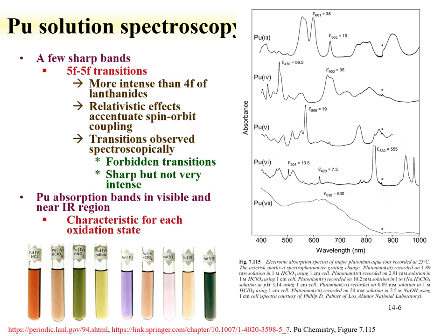Different oxidation states have peaks indicative of that state. For instance, plutonium-6 has an absorbance at 830 nm with a molar absorptivity of 555. Plutonium-4 has a peak at around 650 nm and another around 730 nm, with molar absorptivities on the order of 35 and 60, respectively.